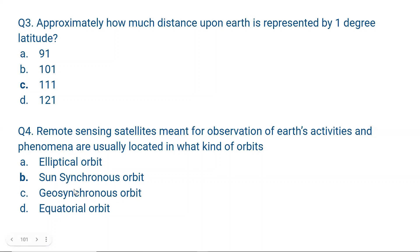Geosynchronous satellites, which are communication satellites, travel in equatorial orbits — they travel around the equator. Any orbit that is not circular is called an elliptical orbit.